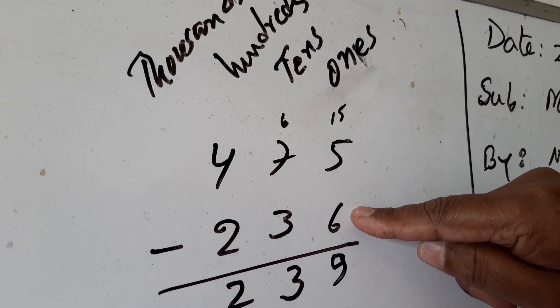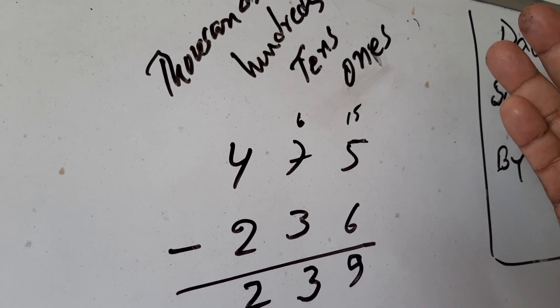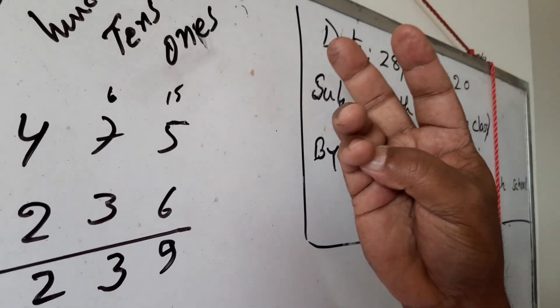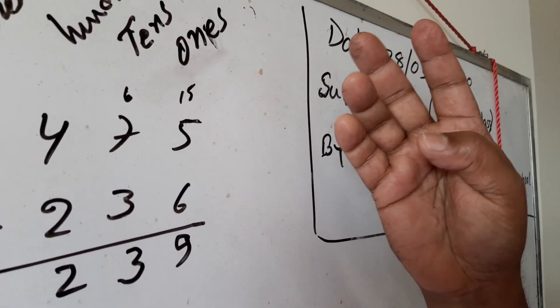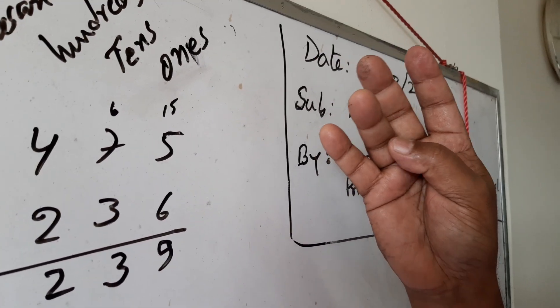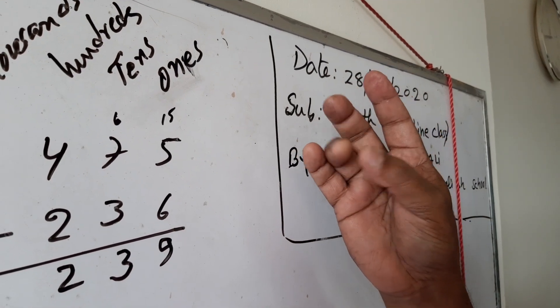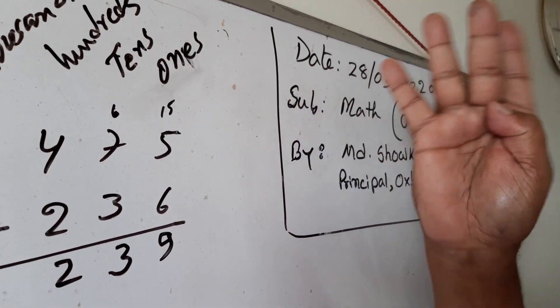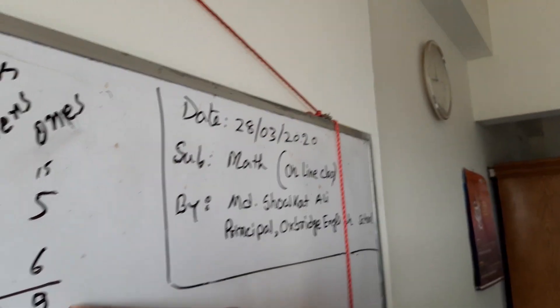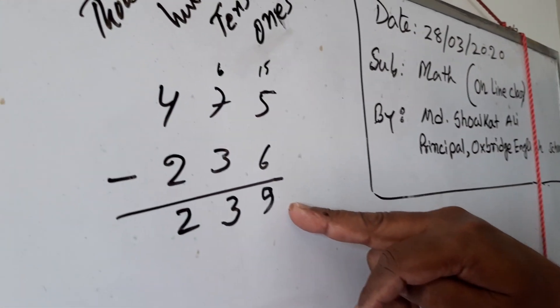15 minus 6 equals 9. And how will you count? Here is 6 — after 6 you count up to 15: 7, 8, 9, 10, 11, 12, 13, 14, 15 — that means 9. Write 9 here.